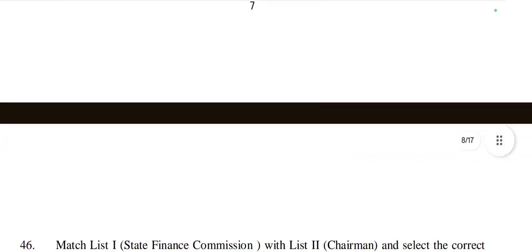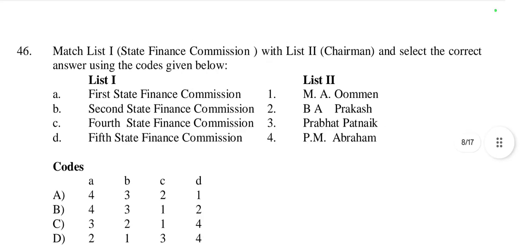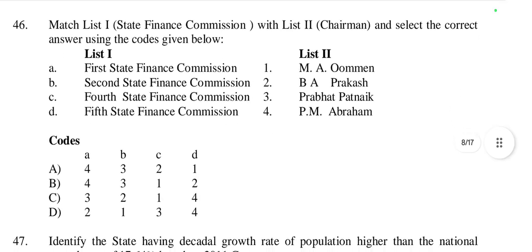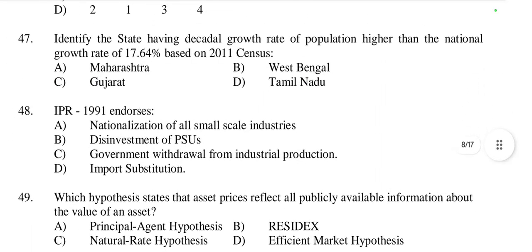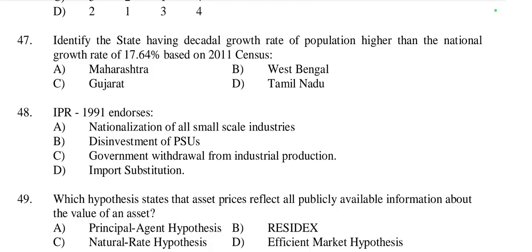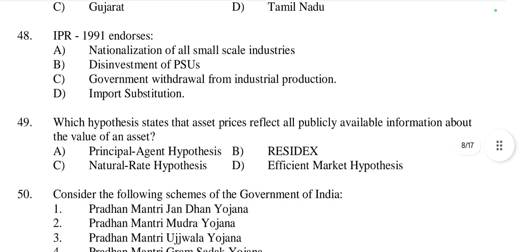Questions 45 and 46 are related to the state of Kerala, so we skip those. Question 47: Identify the state having a decadal growth rate of population higher than the national growth rate of 17.16 percent in the 2011 census. The answer is Gujarat.